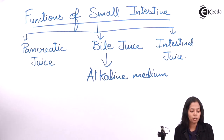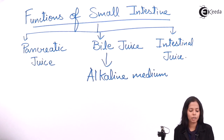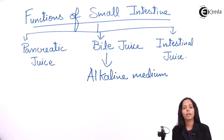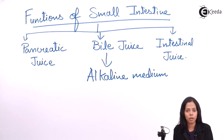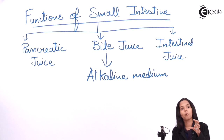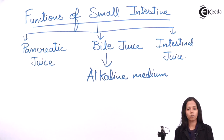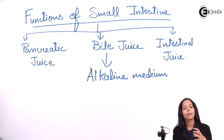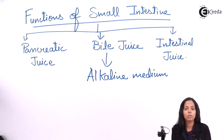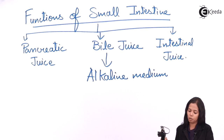In pancreatic juice, the enzymes present are mostly amylase, also called pancreatic alpha amylase. The function of amylase is to break down carbohydrates into smaller molecules. Pancreatic juice consists of the enzyme alpha amylase, which breaks down starch or complex carbohydrates into glucose and maltose.